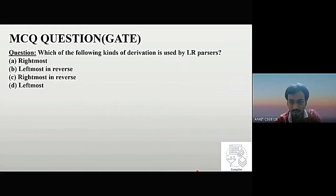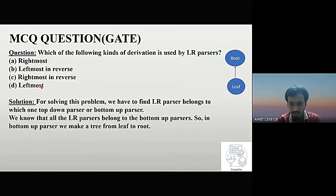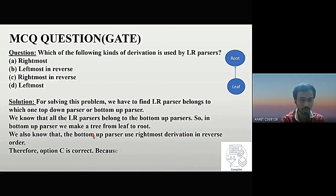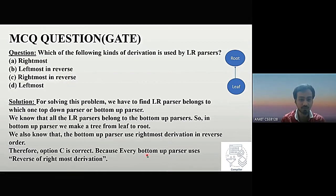The next question: which kind of derivation is used by the LR parser? The options are rightmost, leftmost in reverse, rightmost in reverse, and leftmost. To solve this, we find that all LR parsers belong to the bottom-up parsers. In the bottom-up parser, we build a tree from leaf to root. We know that the bottom-up parser uses rightmost derivation in reverse order. Therefore, option C is correct — every bottom-up parser uses the reverse of rightmost derivation.